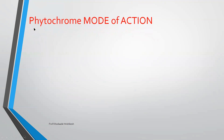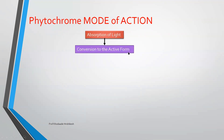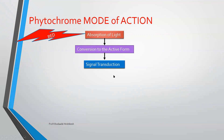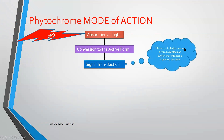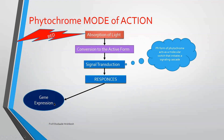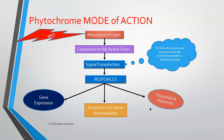Now we reach the last point of this chapter: the mode of action of phytochrome. First, phytochrome shows absorption of light. After absorption of red light, PR form is converted into the active PFR form. Once activated, signal transduction takes place — PFR form acts as a molecular switch that initiates a signaling cascade. This gives responses including gene expression, where transcription factors are activated; activation of cellular intermediates involving secondary messengers and channels; and physiological responses.